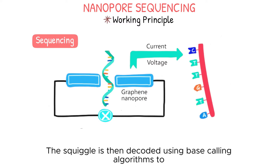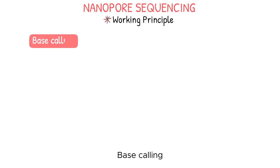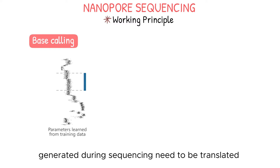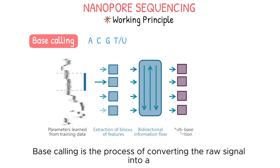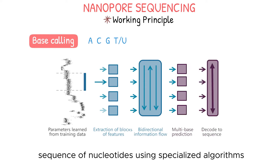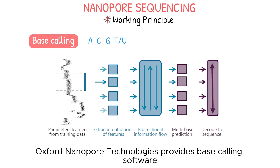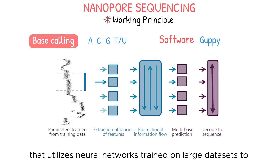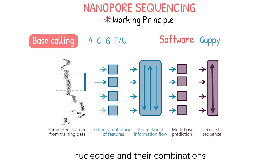The squiggle is then decoded using base calling algorithms to determine the DNA or RNA sequence in real time. Base calling: the raw electrical signals, or squiggles, generated during sequencing need to be translated into a nucleotide sequence — A, C, G, and T, or U. Base calling is the process of converting the raw signal into a sequence of nucleotides using specialized algorithms and machine learning models. Oxford Nanopore Technologies provides base calling software, such as Guppy, that utilizes neural networks trained on large datasets to identify and decode the distinct patterns associated with each nucleotide and their combinations.